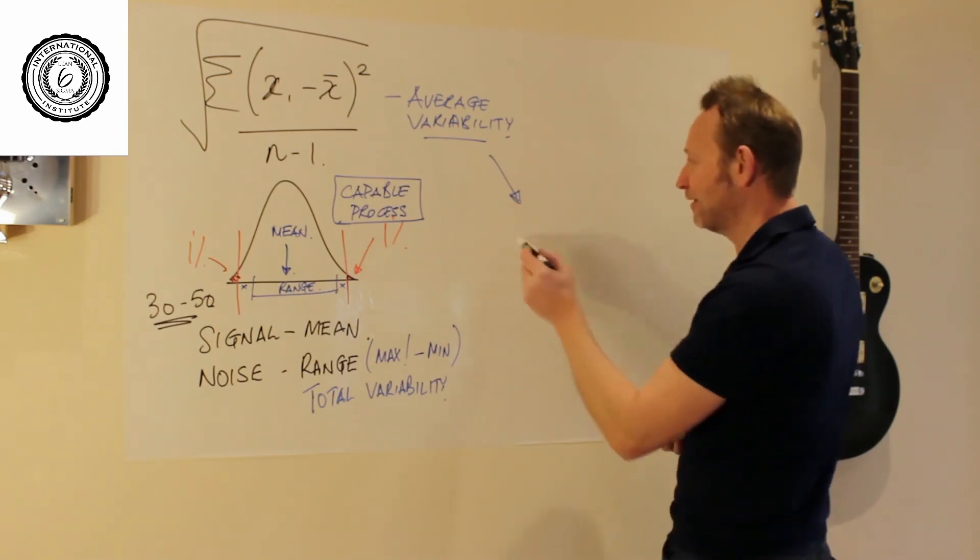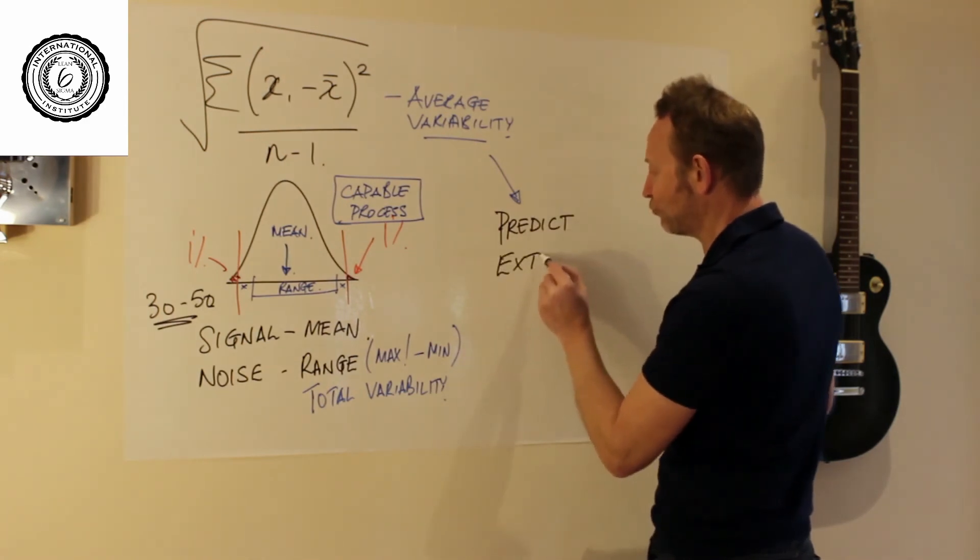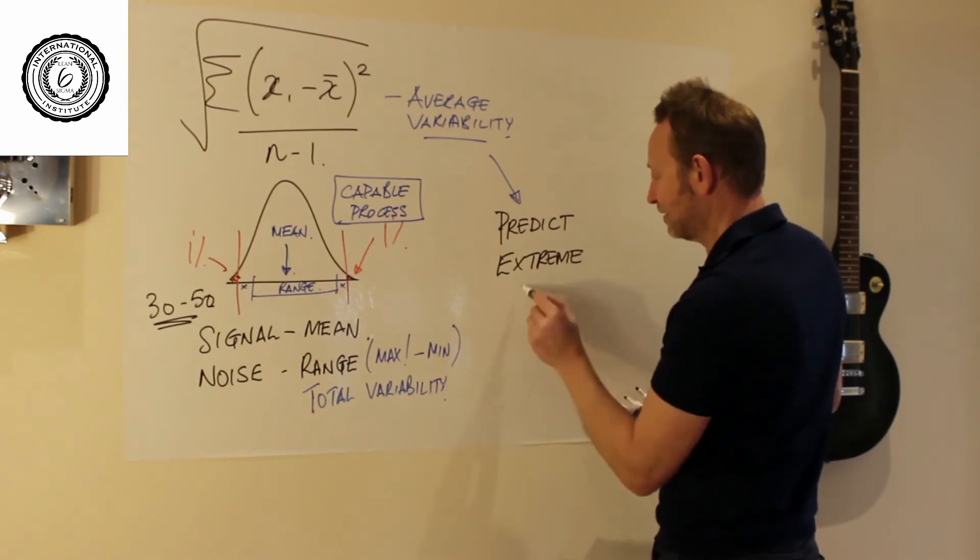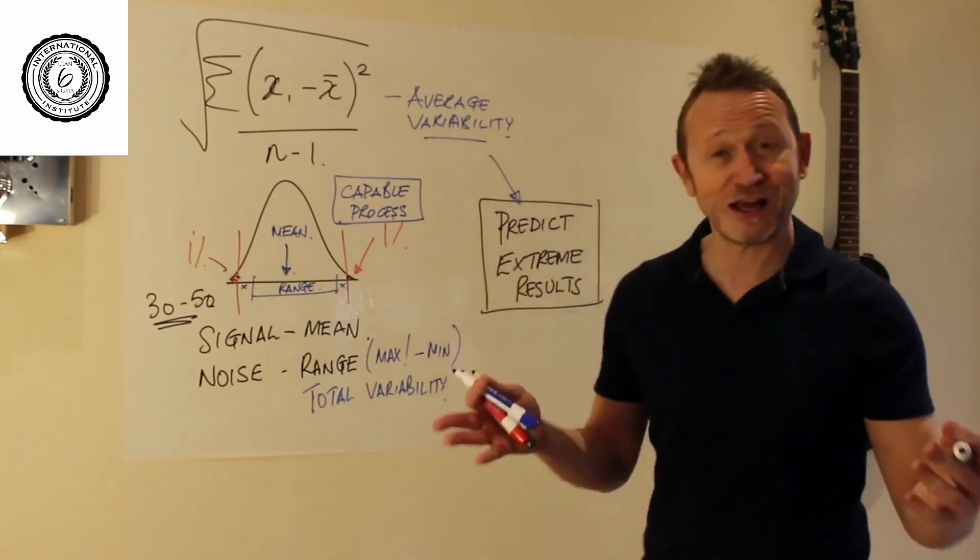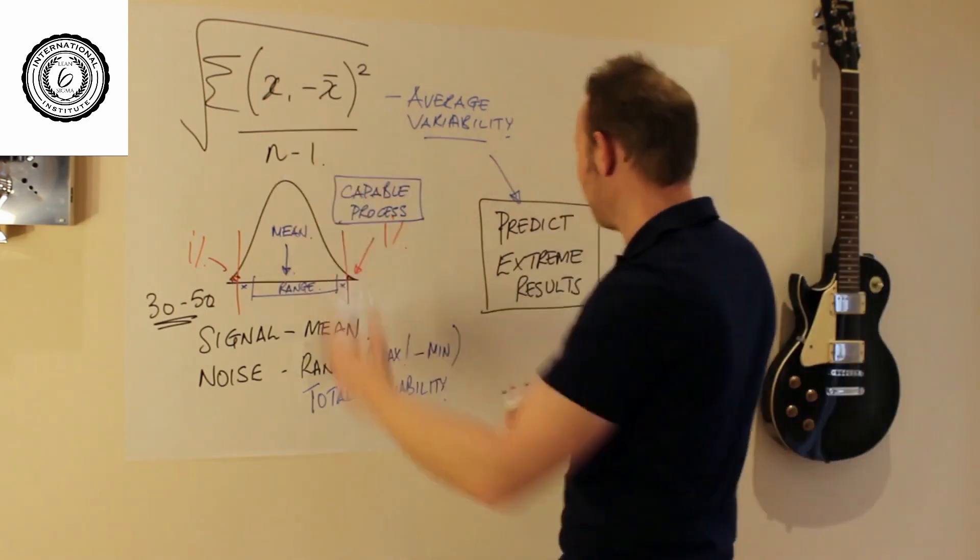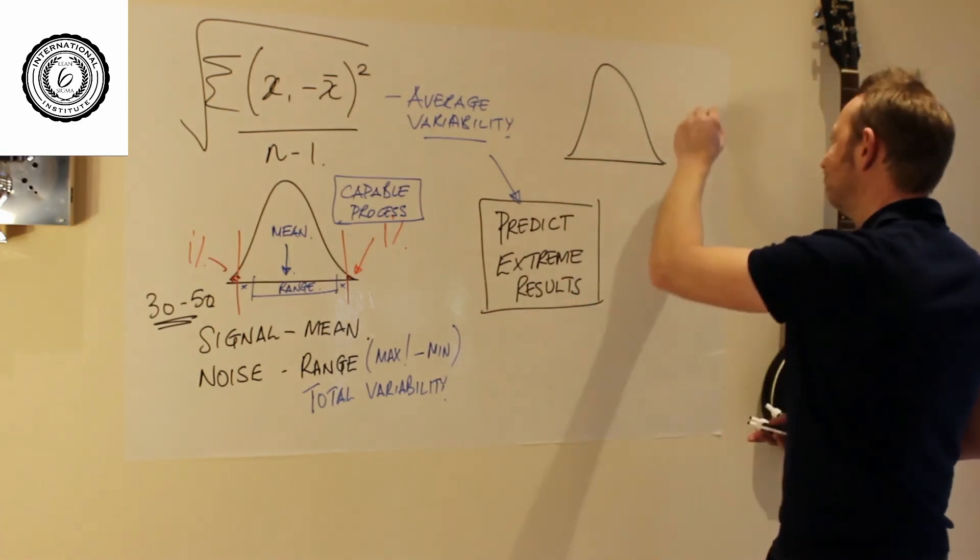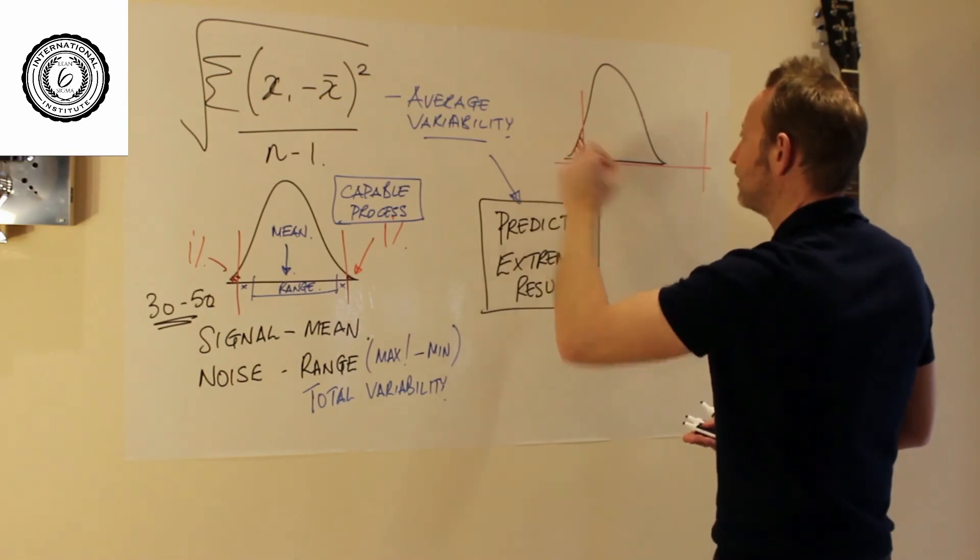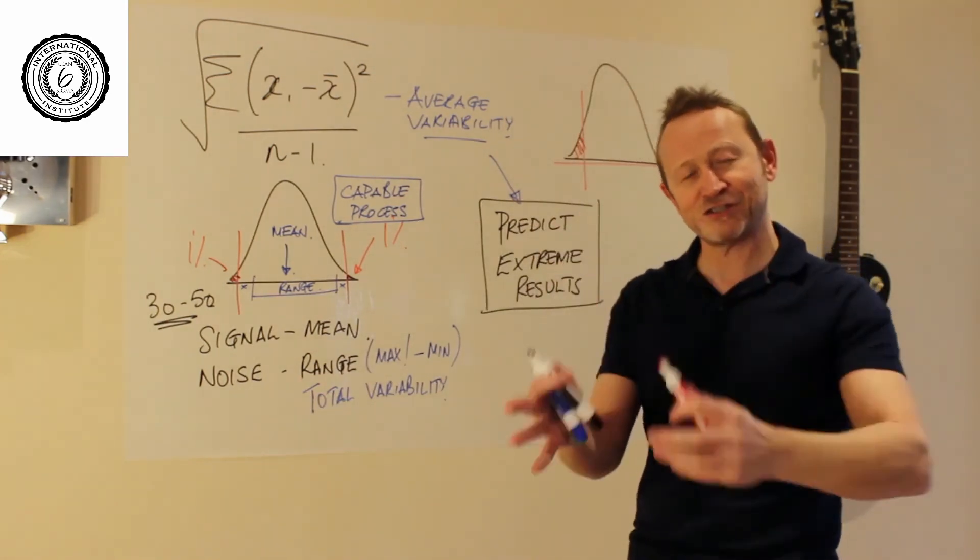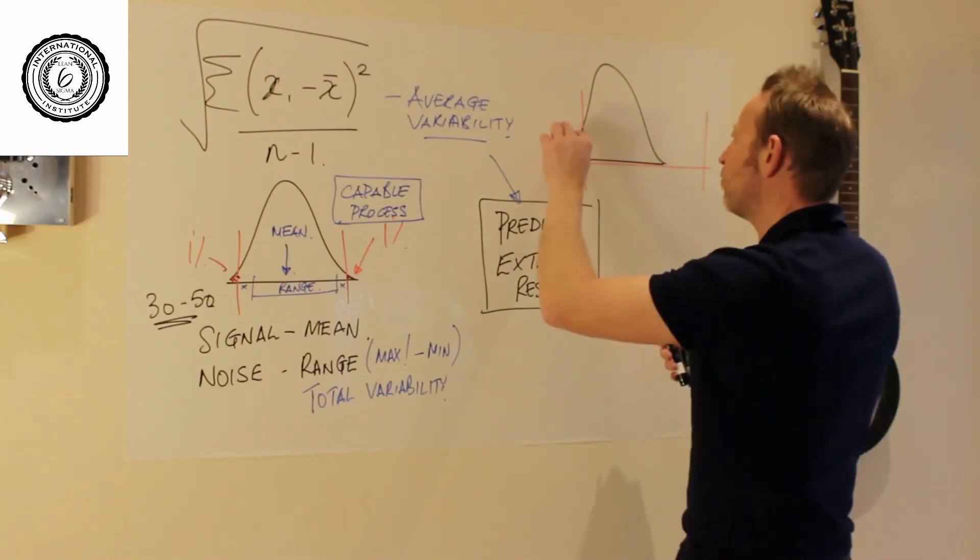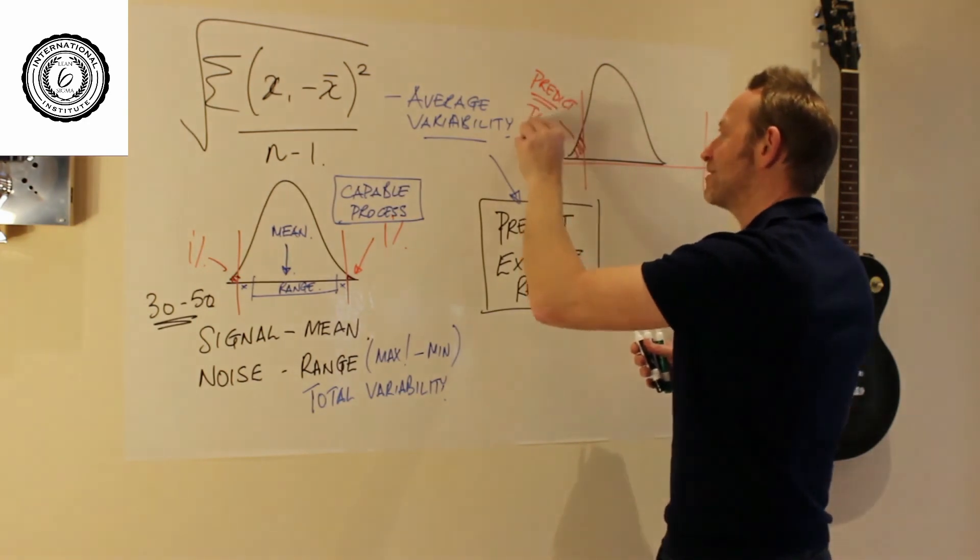It has the power to predict. It has the power to predict extreme results. In fact, not just extreme results. To be honest, it has the power to predict all results. So, for example, if that was what was going to happen, here's the process. It's going to look like this. Let's say the process is off center a little bit. The process is going to look like that. But if you calculate the mean and the standard deviation of that data set from just 30 pieces, what it's going to do is predict the defect rate. It predicts the tail here. How much data is going to fall in the tail.